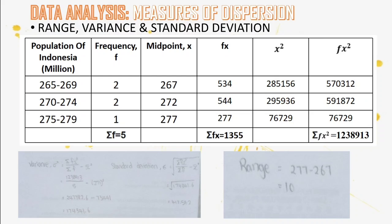For variance, the formula is sum of fx squared divided by sum of f, minus mean squared. The variance is 174,341.6 million. The standard deviation is the square root of variance, giving 417.542. The range is the highest midpoint minus the lowest midpoint, which is 10 million.